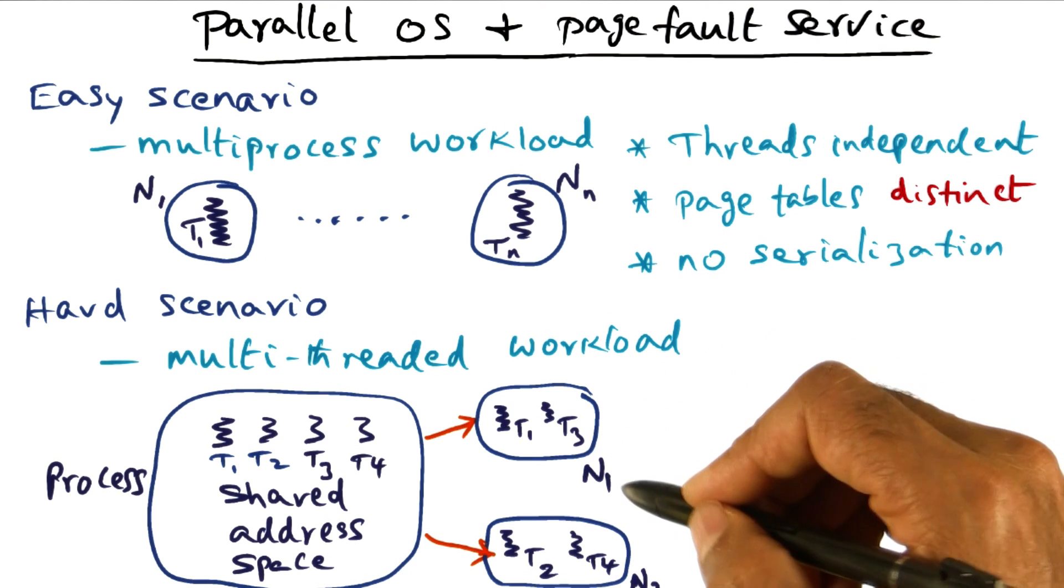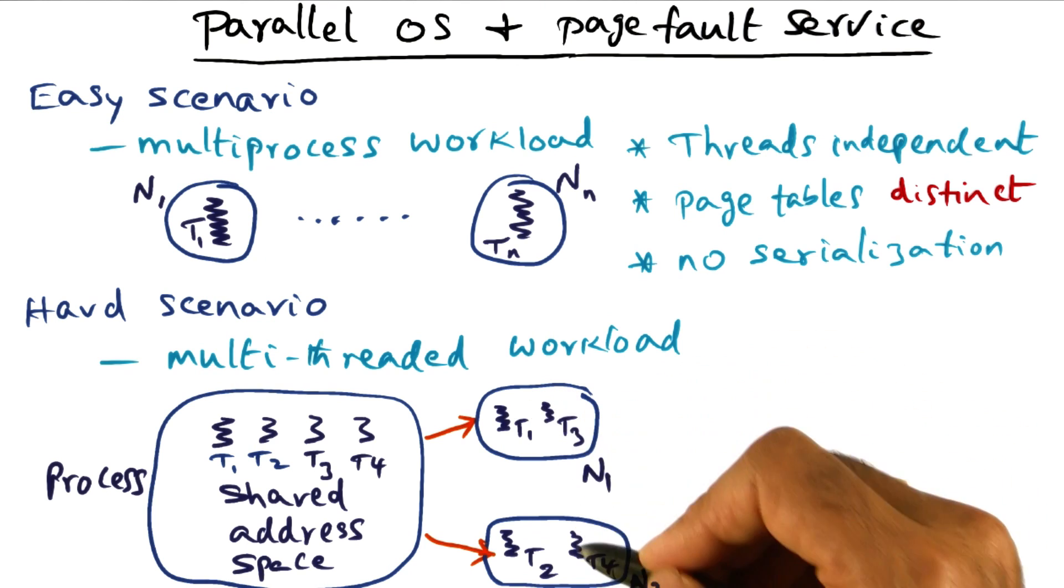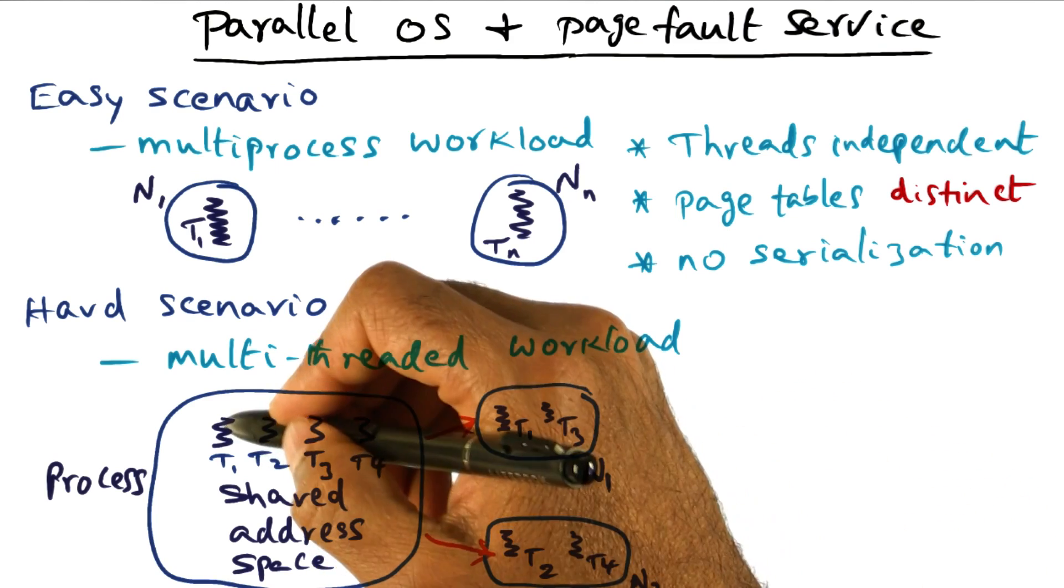To make it concrete, I'm going to show you two nodes, N1 and N2. Let's assume that there are two cores available in each one of these nodes.